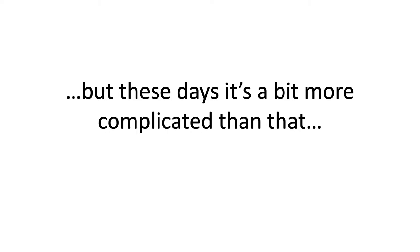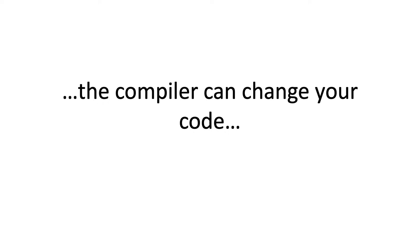But these days it's a bit more complicated than that. Our model of instructions being carried out in order is going to break down largely because of optimizations — things that modern compilers and modern computers do to make your program more efficient and run faster. The first place your program might be changed so that things don't happen in the order you think is in the compiler. These days compilers are very clever and can do a lot of optimizations to your code, and often there's more than one compiler acting on your code.